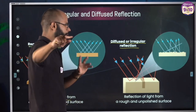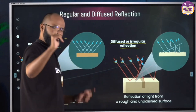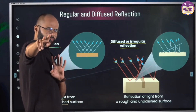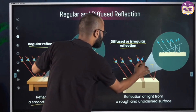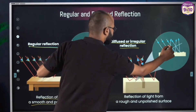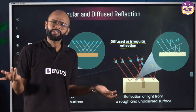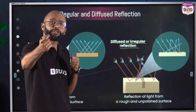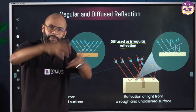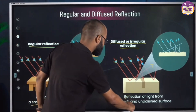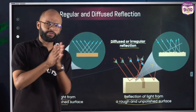Now look at the diffused one. All the incident rays are parallel — that's true. But the problem is with the reflected rays. One is going here, one is going there, one is going somewhere else. All the reflected rays are going in different directions — they scatter everywhere. That is what we call diffused reflection — reflection of light from a rough and unpolished surface.